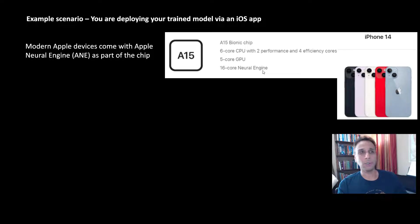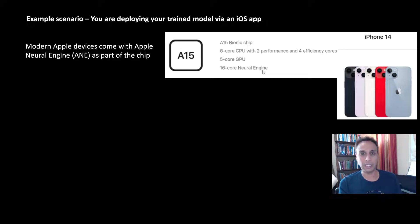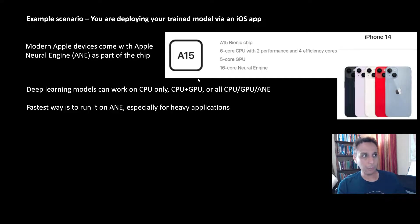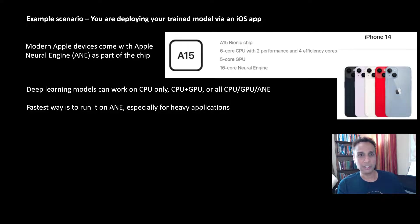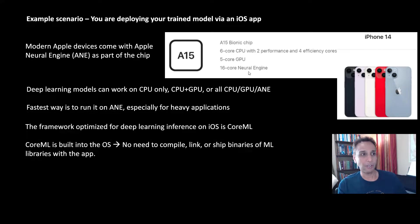So your goal is to develop an iOS app using a trained model. You probably trained your model in PyTorch or Keras, and you have either a .h5 file or a .pt pickle file. Deep learning models can work on CPU only on your iOS device, or CPU plus GPU, or all three: CPU, GPU, and ANE. If you want ANE, that's the fastest and most efficient way, especially for heavy applications with complicated neural networks that take a lot of time — you need them to be almost real-time when deploying to edge devices like iOS.